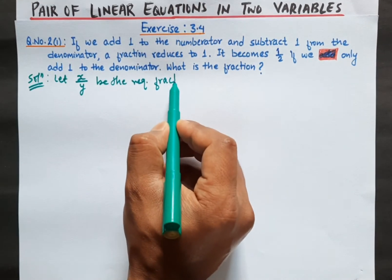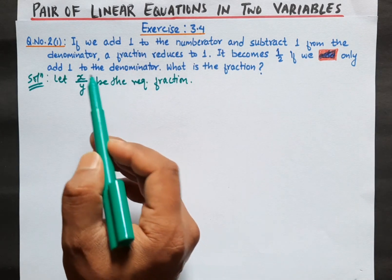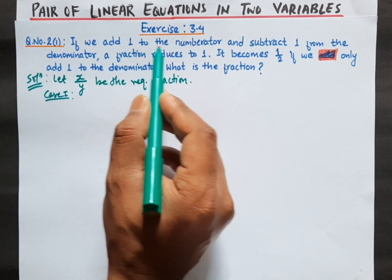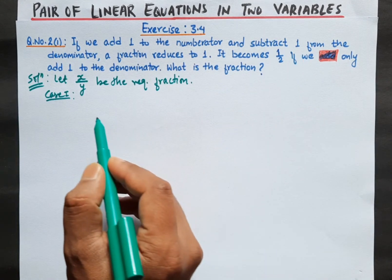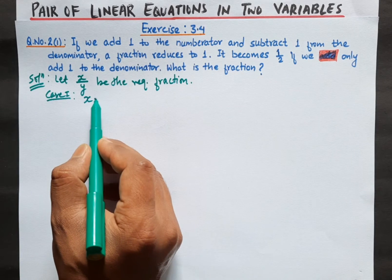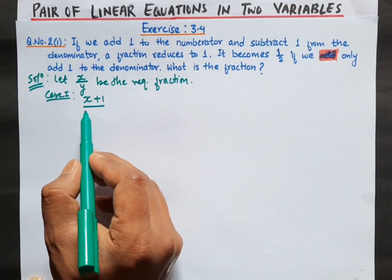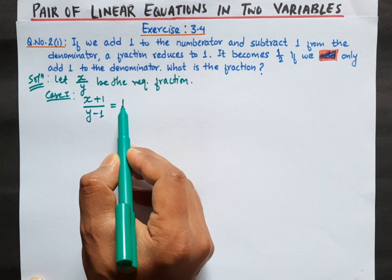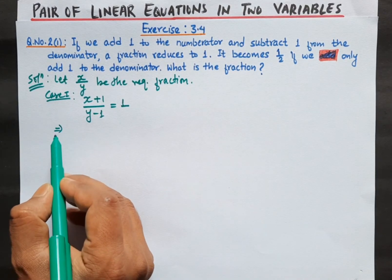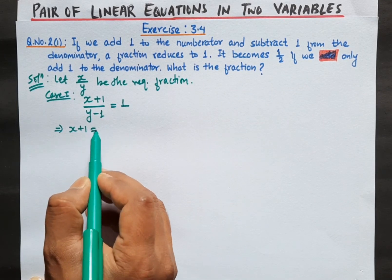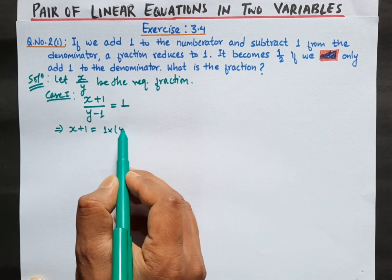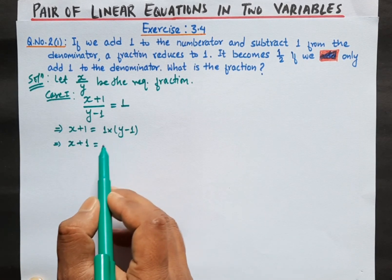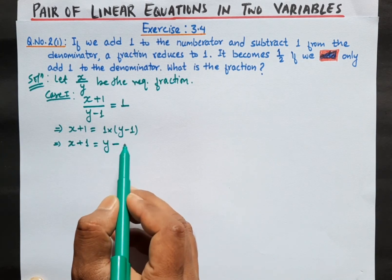According to the question, in case 1, if we add 1 to the numerator and subtract 1 from the denominator, a fraction reduces to 1. So we get x plus 1 over y minus 1 equals 1. Now x plus 1 equals 1 times y minus 1, so x plus 1 equals y minus 1.